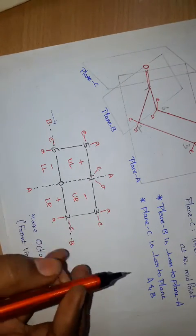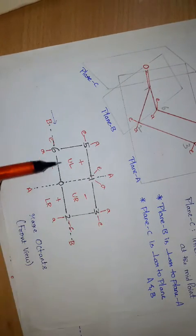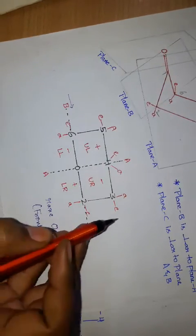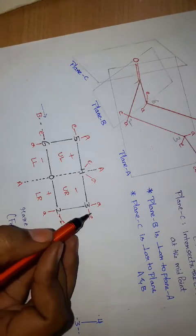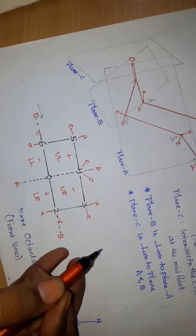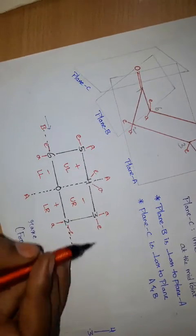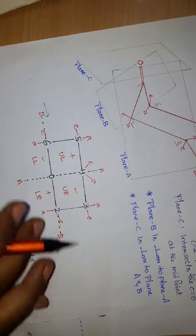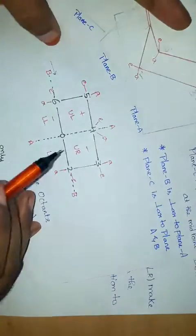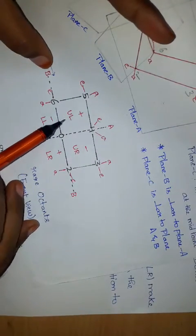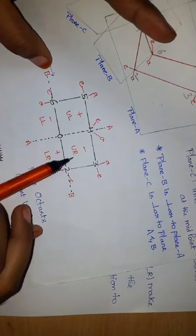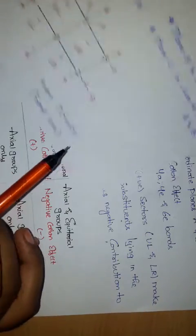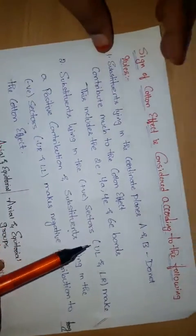These are the 4 rear octants, each having axial and equatorial positions. This is the rear octant view of cyclohexanone. The sign of the Cotton effect: upper left is positive, upper right is negative, lower right is positive, and lower left is negative, assigned according to the following rules.